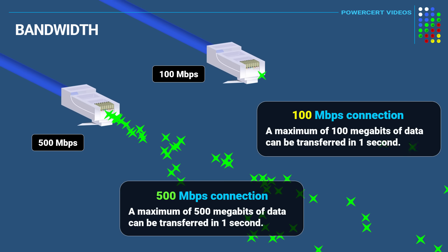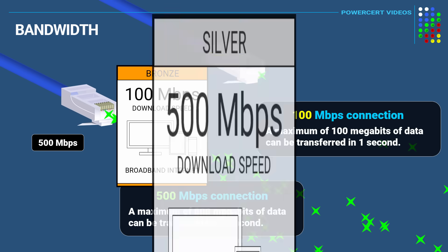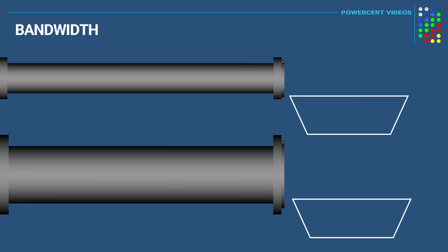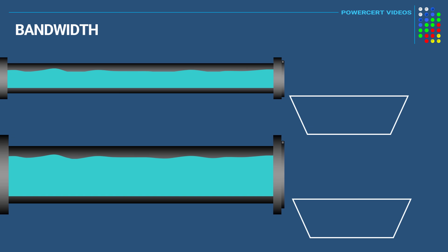This is why internet service providers advertise their internet connections as speeds. As an analogy, we can use an illustration of water flowing through a pipe. Depending upon the diameter of the pipe, it will directly affect how much water can flow through it.